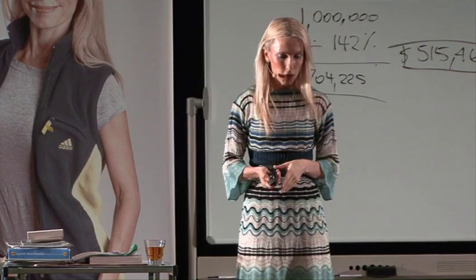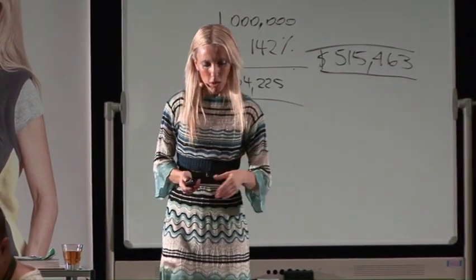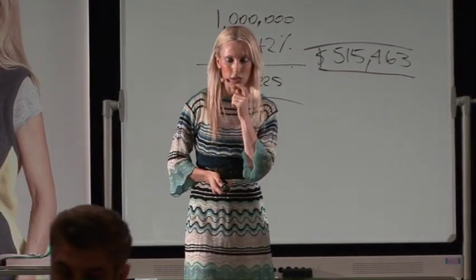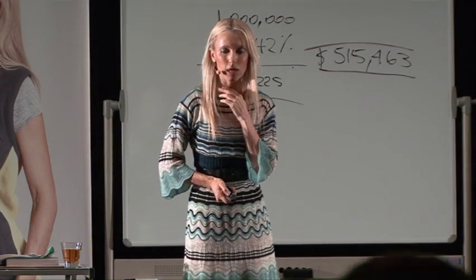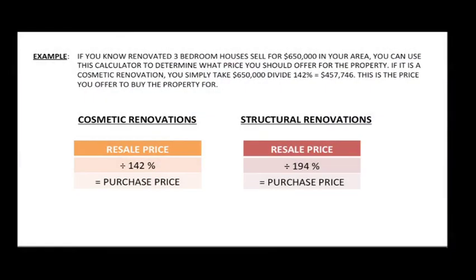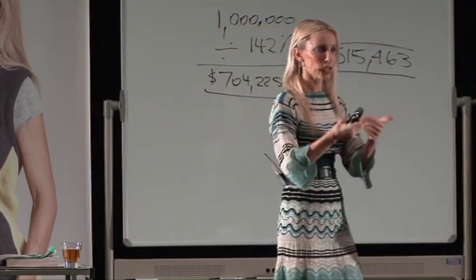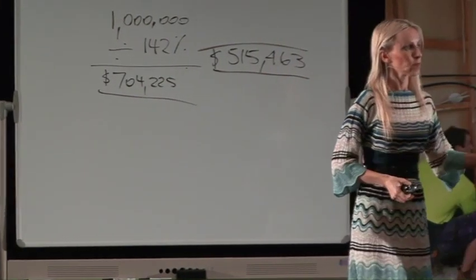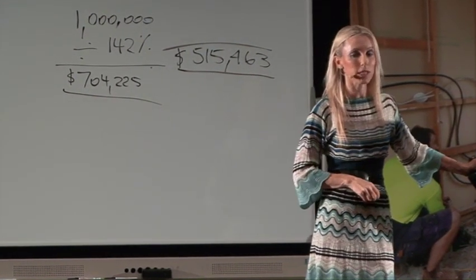Let's do the class exercise. In your workbooks, turn to the resale price calculator. Calculate the resale price required on an unrenovated house with a purchase price of $440,000 for both a cosmetic and a structural renovation. I'll give you five minutes. If you're stuck, turn to your neighbour. Purchase price is $440,000 on both columns.